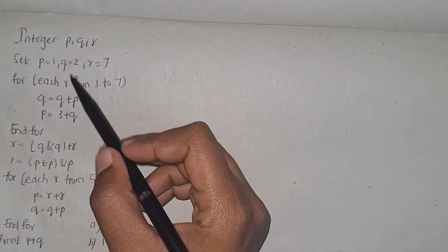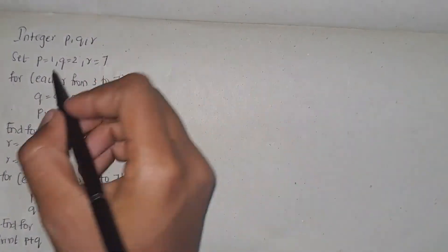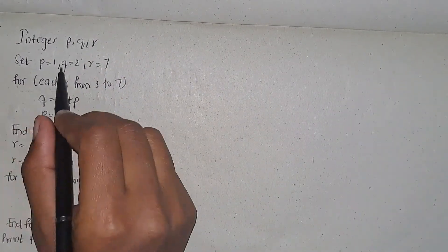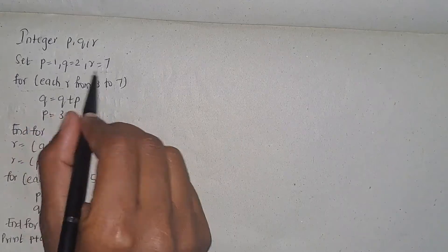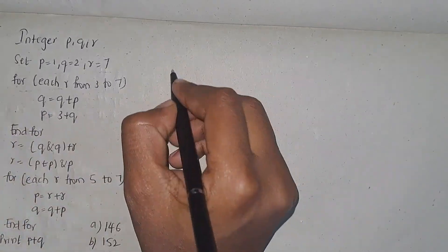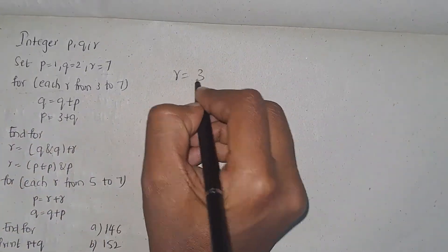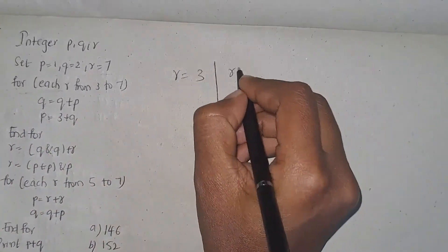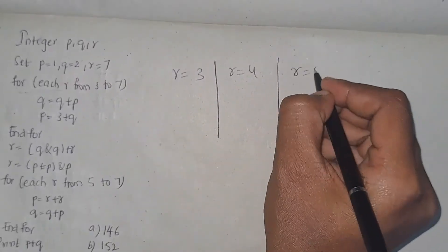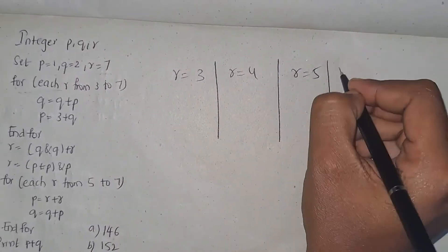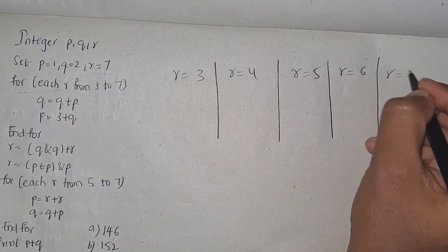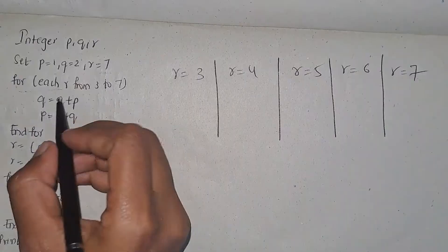In this question you start with assigned values and perform iterations for r equals 3, r equals 4, r equals 5, and r equals 6.